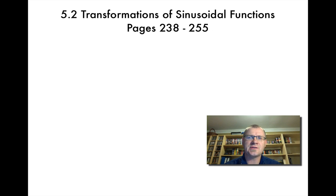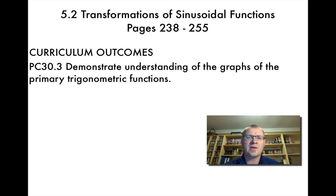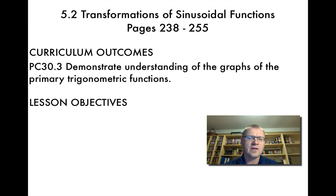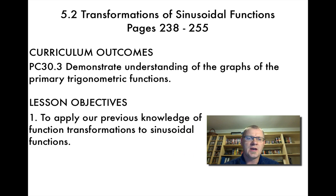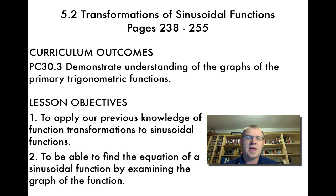Lesson 5.2 is about transformations of sinusoidal functions, on pages 238 to 255 in your text. Our curriculum outcome is demonstrating understanding of the graphs of primary trigonometric functions. Our two lesson objectives are: first, to apply our previous knowledge of function transformations to sinusoidal functions, and second, to find the equation of a sinusoidal function by examining its graph.